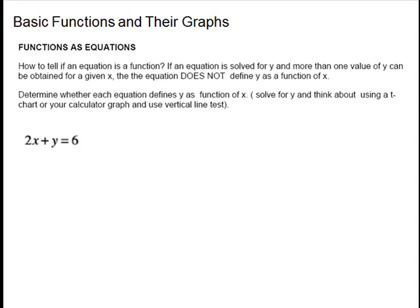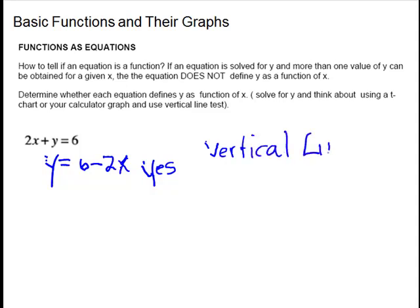Hopefully you would recognize that this is a line — it is not a vertical line, because a vertical line is x equals some constant. So we can go ahead and isolate the y, and y equals 6 minus 2x. It is a line because our exponents on x and y are 1, and it's not a vertical line, so yes, it's a function. Every line except a vertical line is a function. A vertical line is something like x equals negative 2 — that's the straight up and down line through negative 2, so this is not a function. But every other line is going to be a function.